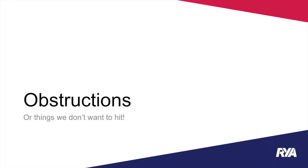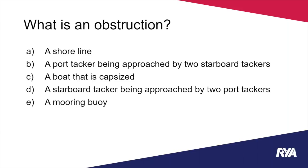Now we move on to the main topic: obstructions — things we don't want to hit. Before going into the rules around obstructions, we need to agree on what an obstruction actually is. Of five options presented — a shoreline, a boat that is capsized, and a starboard tacker being approached by two port tackers are obstructions; two of the options are not.